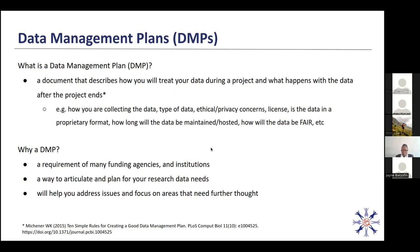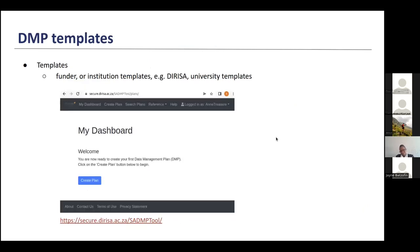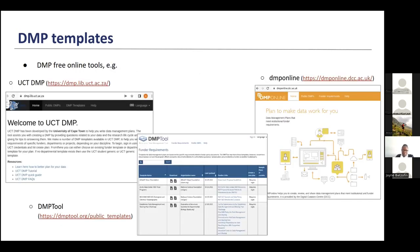Why should you put together a DMP? As we've said, it's often a requirement of many funding agencies and institutions. It's a way to articulate and plan for your research data needs, and will help you address issues and focus on areas that need further thought — so it's a great planning tool, kind of like project management but for data. How do you put one together? You can find templates from funders — if it's a requirement of theirs, they may have a template they want you to use. Institutions also sometimes have templates, such as DERISA, which is the Data Intensive Research Initiative of South Africa. There are also many free online tools for putting together a DMP.